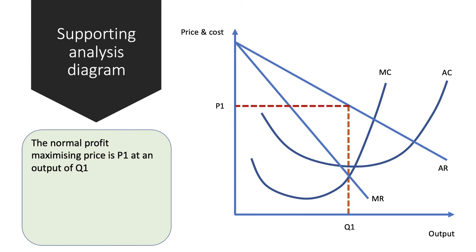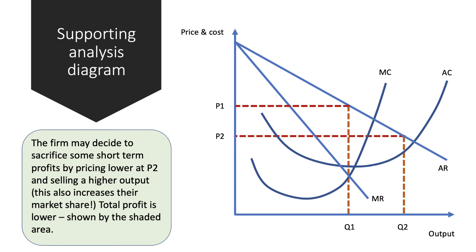Here's the analysis diagram for limit pricing. You can see a downward-sloping demand curve, downward-sloping AR and MR. The profit-maximizing output is P1, Q1 — that's the equilibrium. The limit price is where the firm sacrifices some short-term profits; for example, it might cut the price to P2, getting a bigger output and taking more market share. However, the profit at output Q2 is less than before — P2 minus C2 times Q2 gives the total profit.